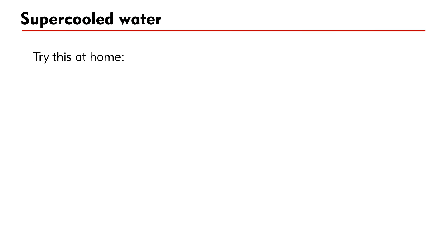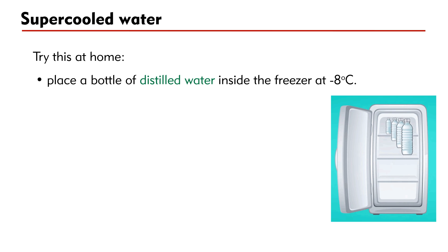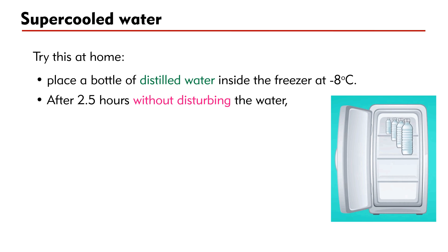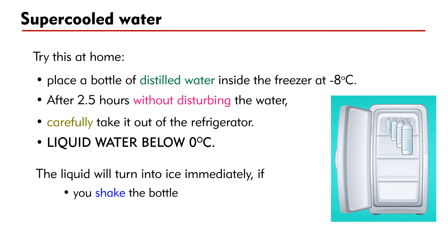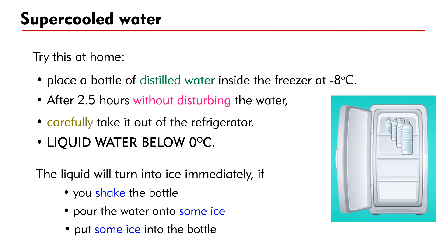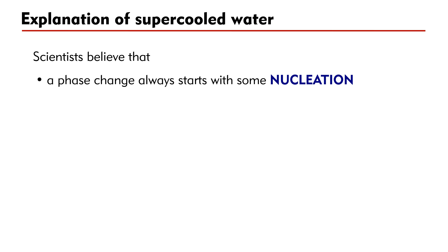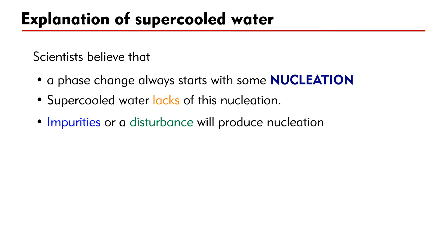This is called supercooled water. You can try this experiment at home. Place a bottle of distilled water inside the freezer at minus 8 degrees Celsius. After about two and a half hours, without disturbing the water — don't even open the door of the refrigerator — carefully take it out. You may get a bottle of supercooled water, which is liquid water below 0 degrees Celsius. When you shake the bottle, or pour the water onto some ice, or put some ice into the bottle, the liquid will turn into ice immediately. Scientists explain this phenomenon by the fact that a phase change always starts with some nucleation. Supercooled water lacks this nucleation; however, impurities or a disturbance will produce nucleation, causing the supercooled water to freeze quickly.